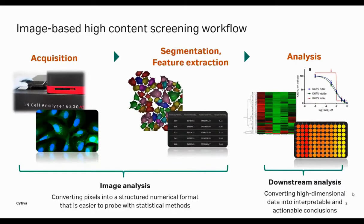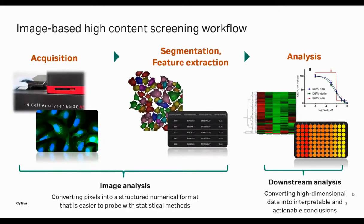It's far more images than you could ever afford time to look at and make sense of, if you're trying to understand, for example, an efficacious drug to rescue some diseased phenotype. So we need algorithms and computers to help us with methods like object segmentation — finding single cells in an image and extracting features or measurements from those. Another way to break this down is into two parts: image analysis and downstream analysis.